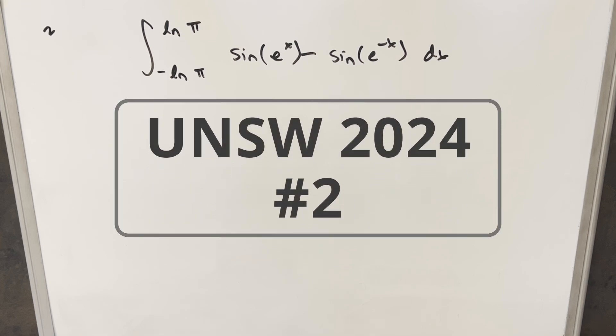Okay, we have written another interesting integral from the UNSW integration B 2024 problem 2. We have the integral from minus ln π to ln π, sine e to the x minus sine e to the minus x dx.